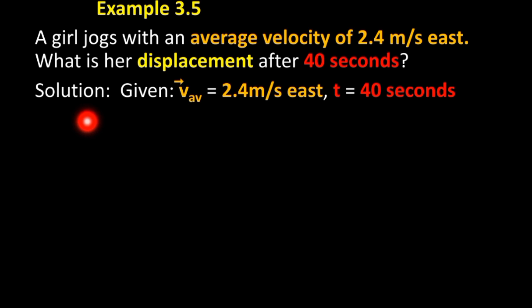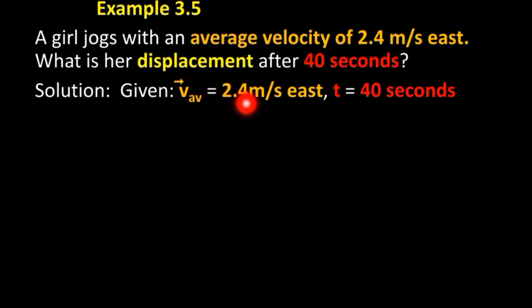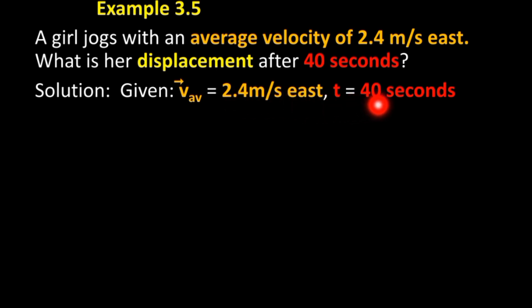Solution: Given — average velocity is 2.4 meters per second east, time is equal to 40 seconds. We need to find the displacement. Displacement is equal to average velocity times time.